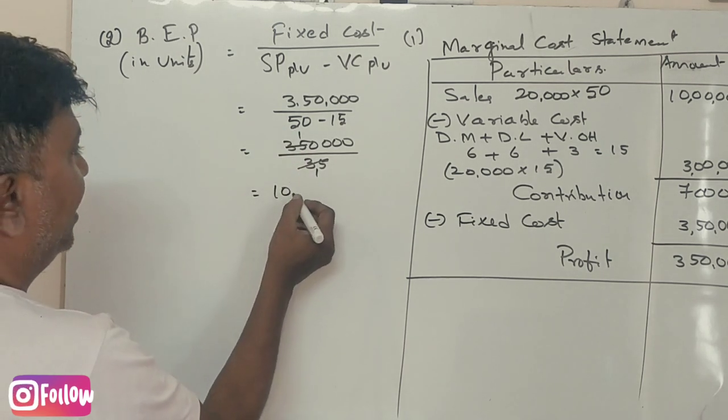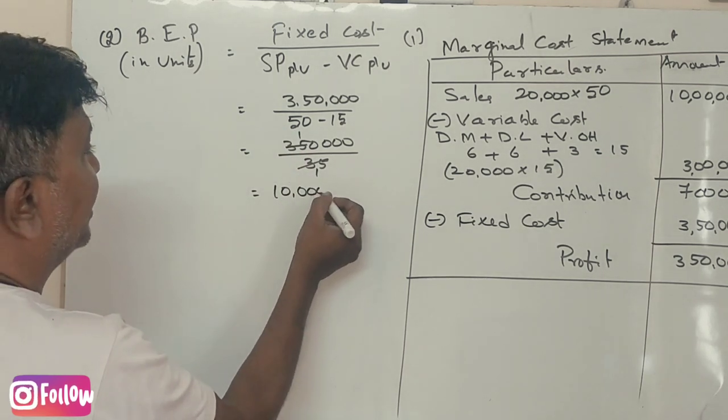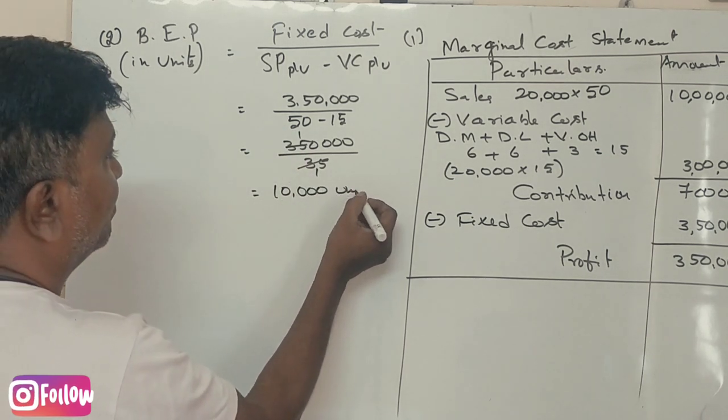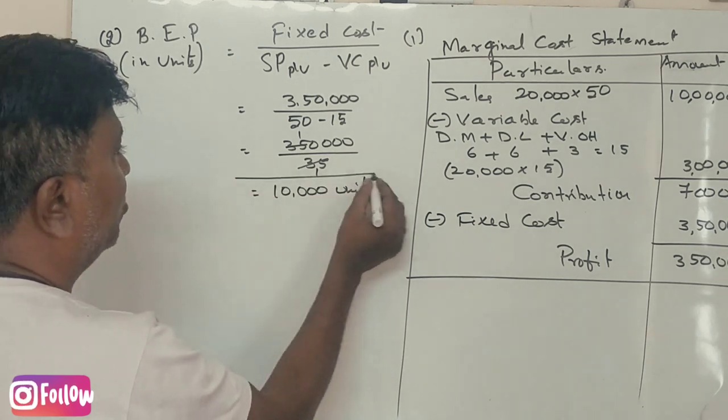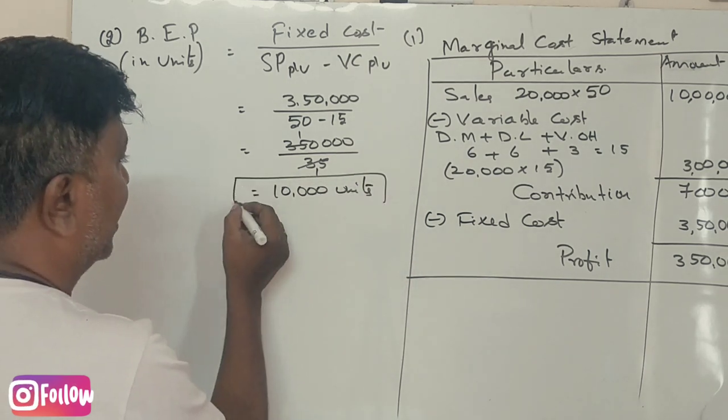That gives us 10,000 units as the break-even point.